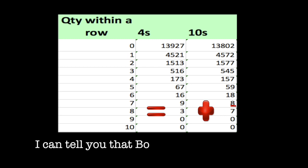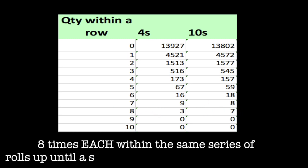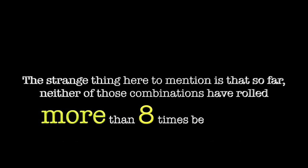I can tell you that both four and ten rolling eight times each, within the same series of rolls until the seven out, has not happened yet. The strange thing here to mention so far is that neither of those combinations have rolled more than eight times before a seven out.